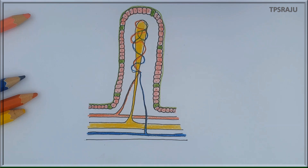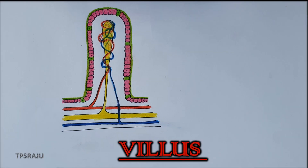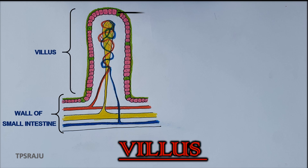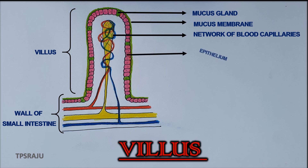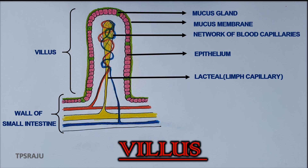If we apply the colors once again perfectly, it will appear very beautiful. Finally, shall we label the parts: wall of small intestine, villus, mucus gland, mucus membrane, network of blood capillaries, epithelium, lactiole or lymph capillary, artery, lymph vessel, and vein.